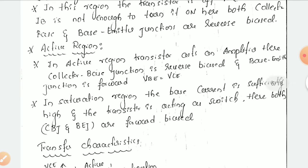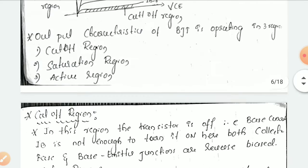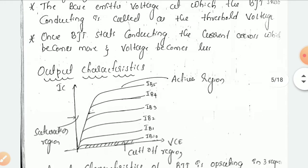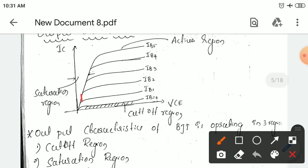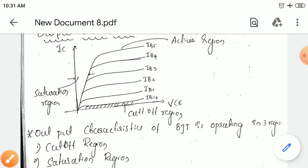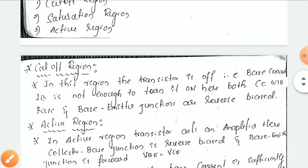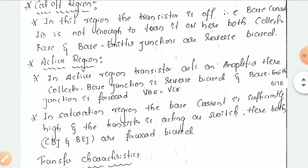In the active region, the transistor can act as an amplifier, which amplifies the signal. Here the collector base junction is reverse biased and the base emitter junction is forward biased. In this active region — this is called active region — it will be acting as an amplifier which amplifies the signal.